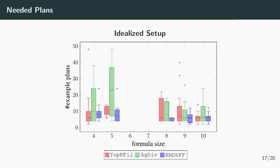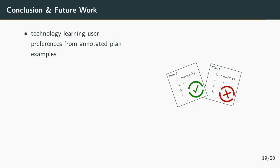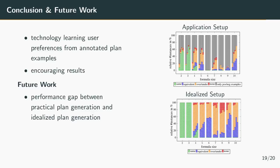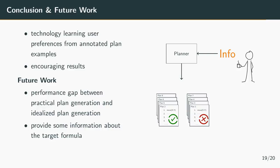To conclude we assembled a technology which can be used to learn user preferences from annotated plan examples and we showed that the results are encouraging. The biggest bottleneck is the performance gap between the application and the idealized setup. In the future we want to try to close this gap by introducing additional information from the user to the plan generation step. This additional information could for example include which objects or predicates the user is interested in or if he only wants to look at preferences which reflect an ordering for example. Thank you for listening, I hope you find our work interesting and I'm happy to answer any of your questions.